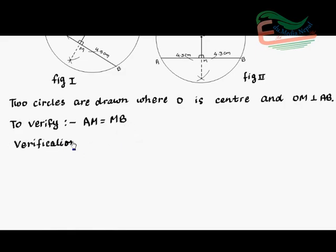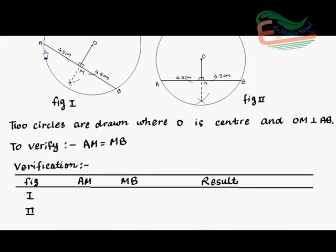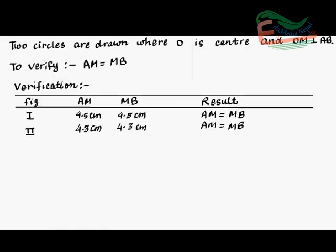Next, verification. Figure, AM, MB, then result or remarks. Figure 1 and 2 because there are two figures. In first figure AM equals to 4.5 cm and MB equals to 4.5 cm. So we write 4.5 cm, 4.5 cm and result AM equals to MB. Similarly, in figure 2 also, AM equals to 4.3 cm and MB equals to 4.3 cm. So we write 4.3 cm, 4.3 cm and result AM equals to MB. Now, table is completed.